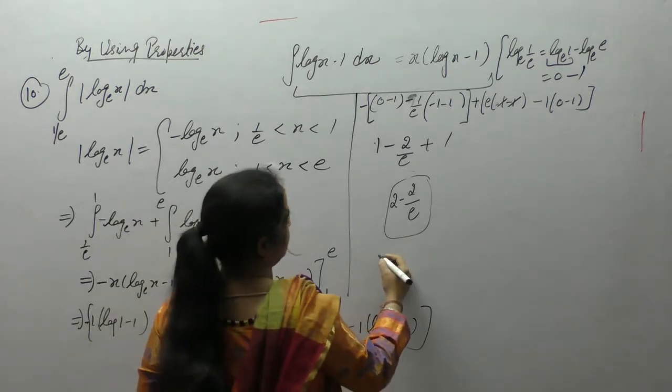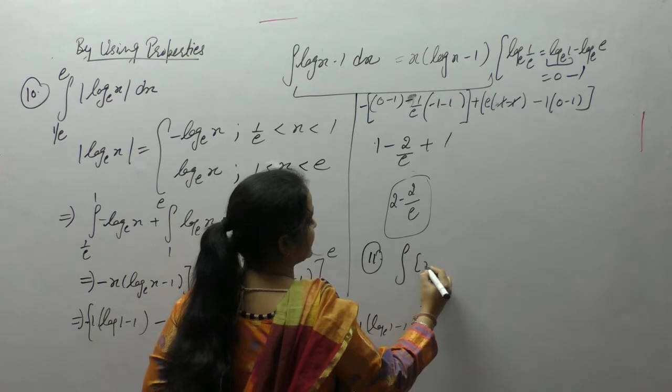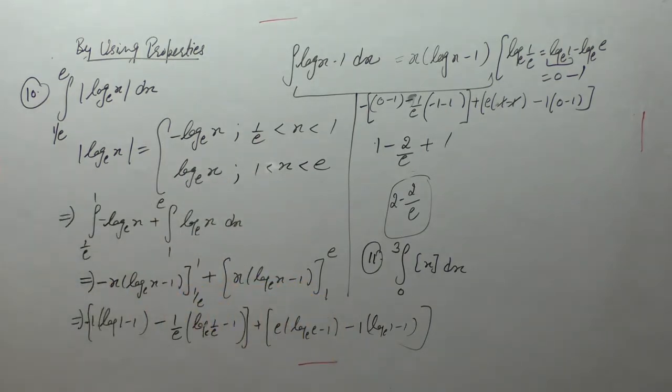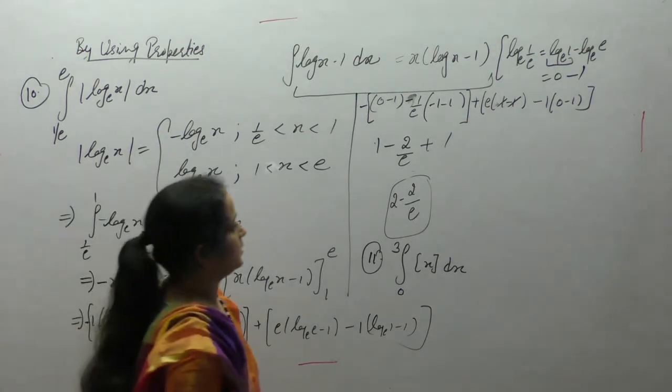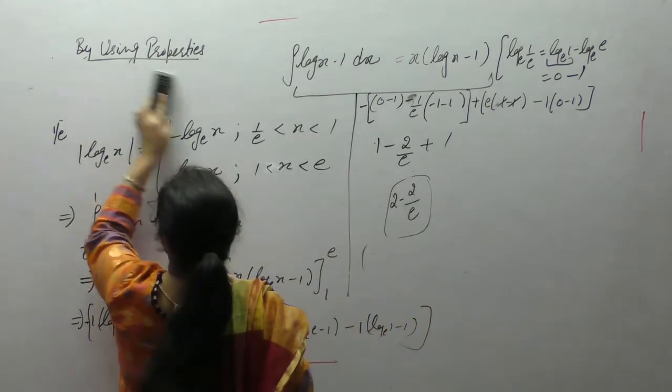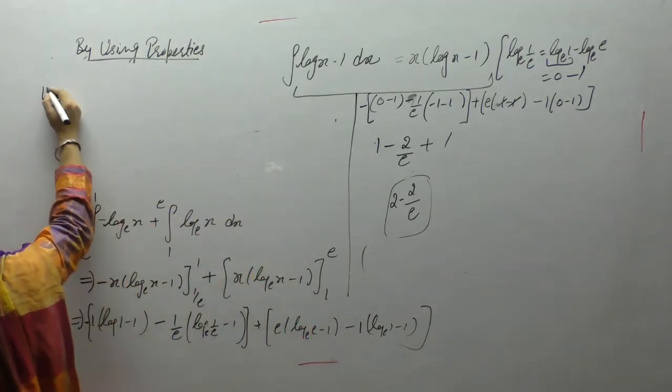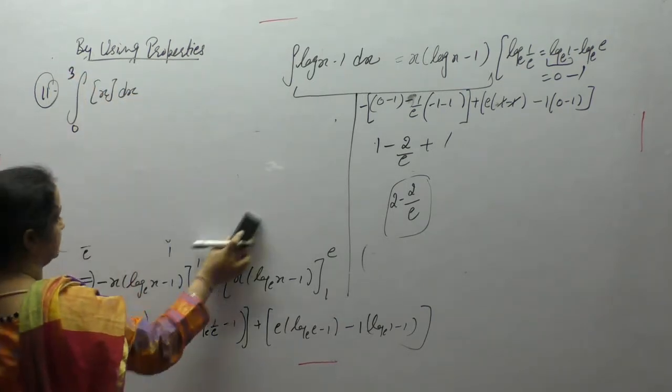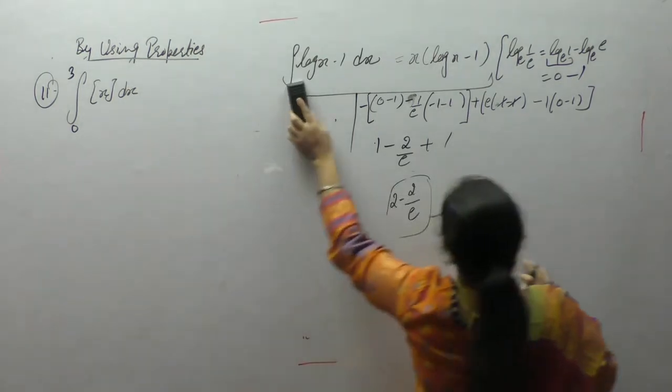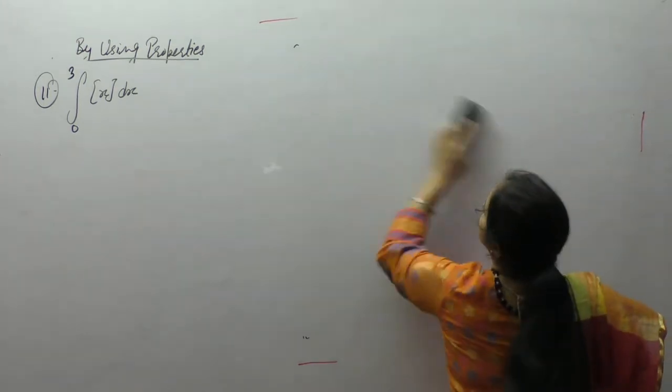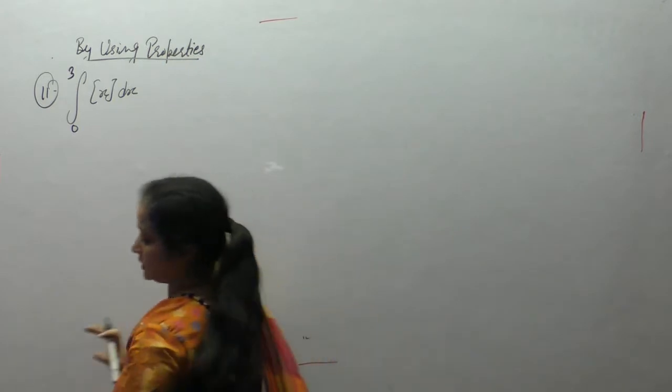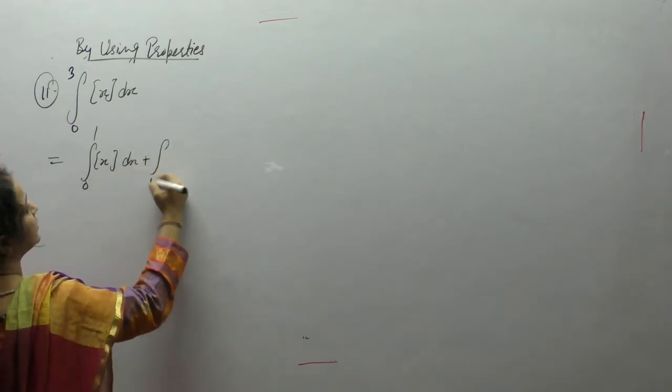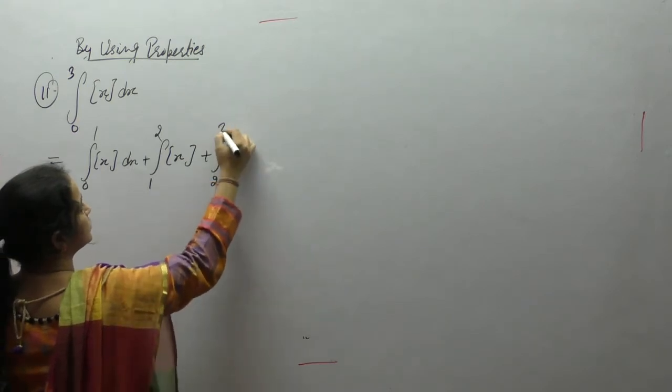Next is integral of greatest integer x, limit goes from 0 to 3. Integral of greatest integer x, limit 0 to 3. Now the value of greatest integer lies between 0 to 1, 1 to 2, and then 2 to 3.